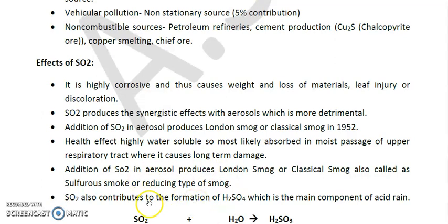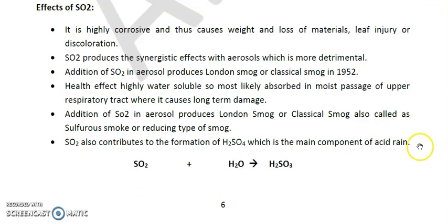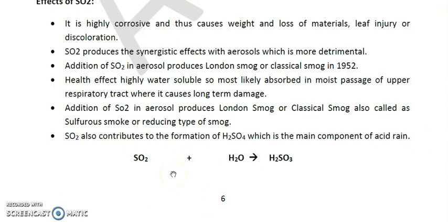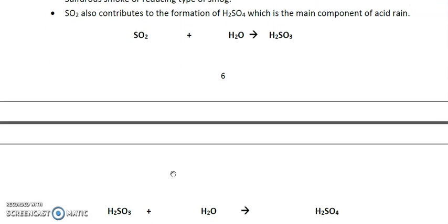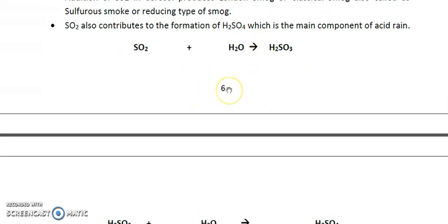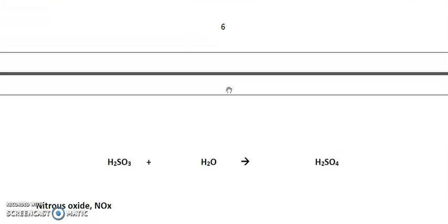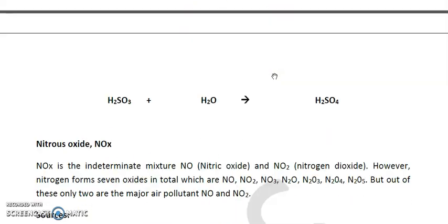SO₂ also contributes to the formation of H₂SO₄, which is the main component of acid rain. In the environment, SO₂ first combines with water to form H₂SO₃, and then H₂SO₃ combines with water to form H₂SO₄ in the second step. This is how the acid rain reaction proceeds in the environment.